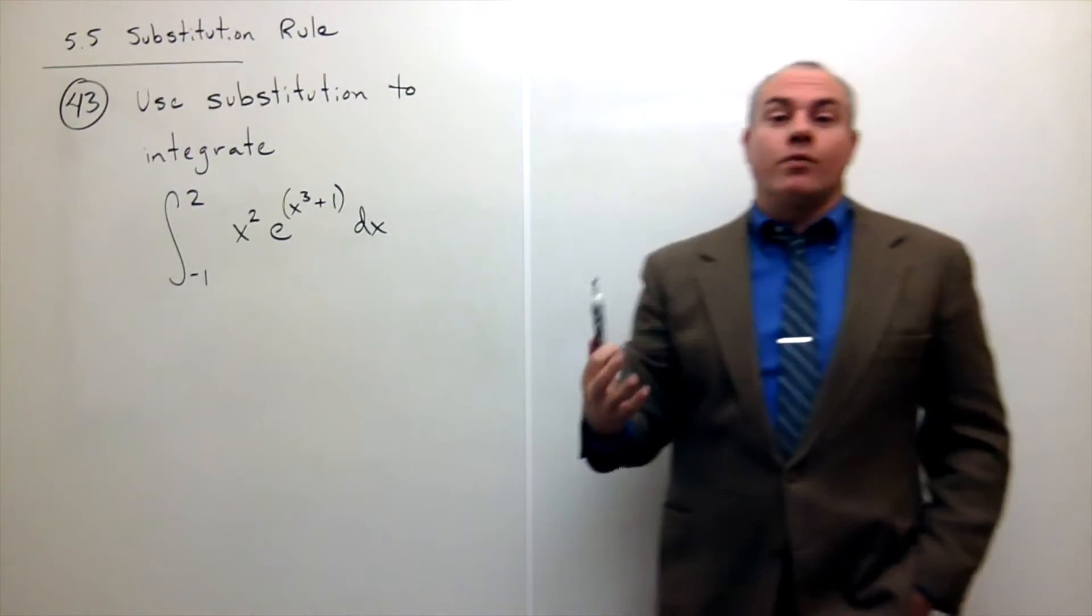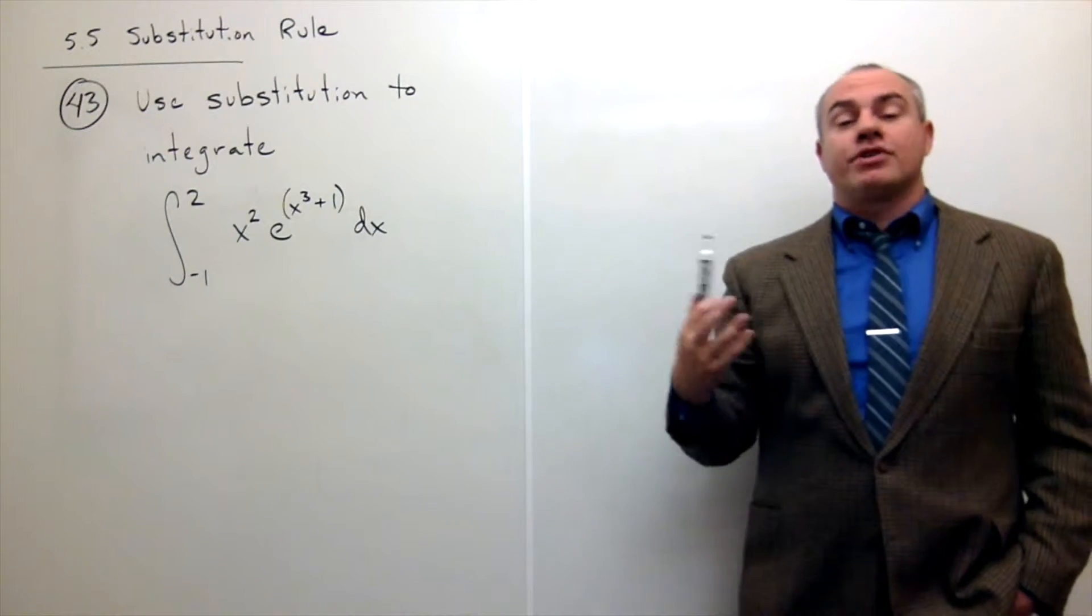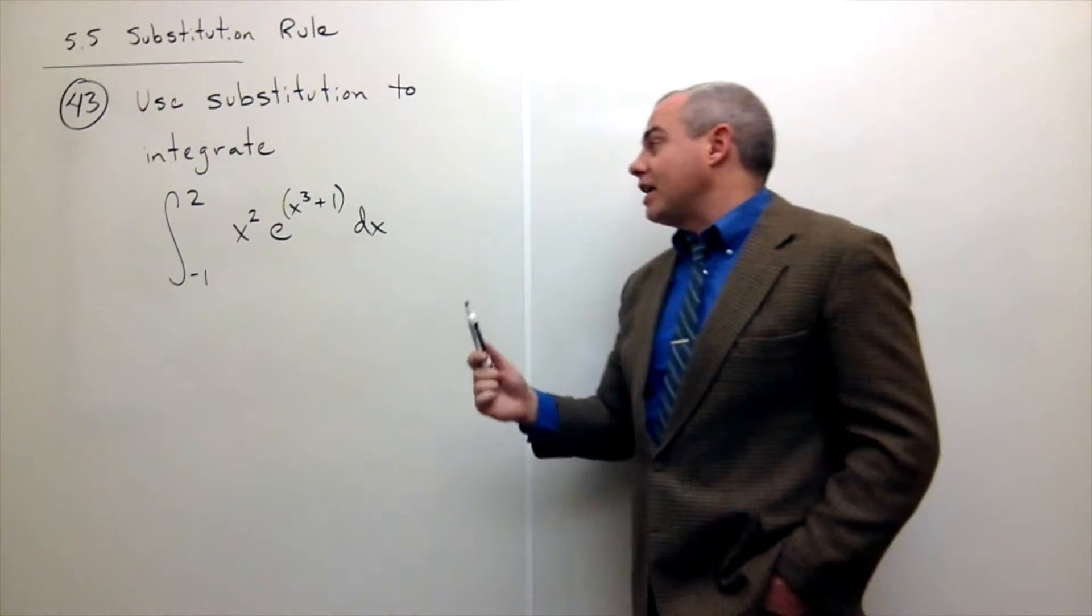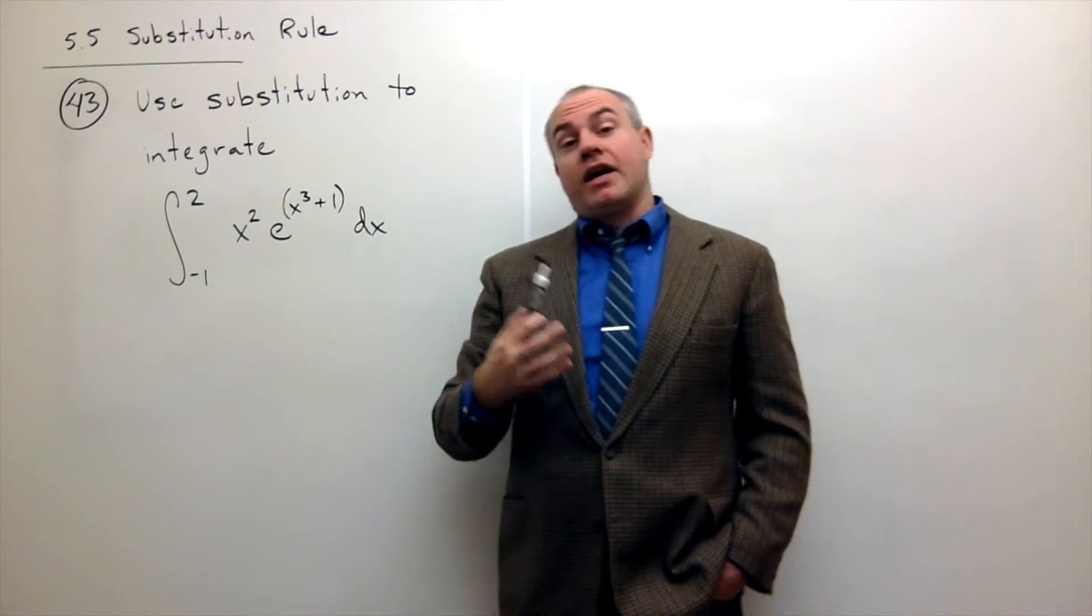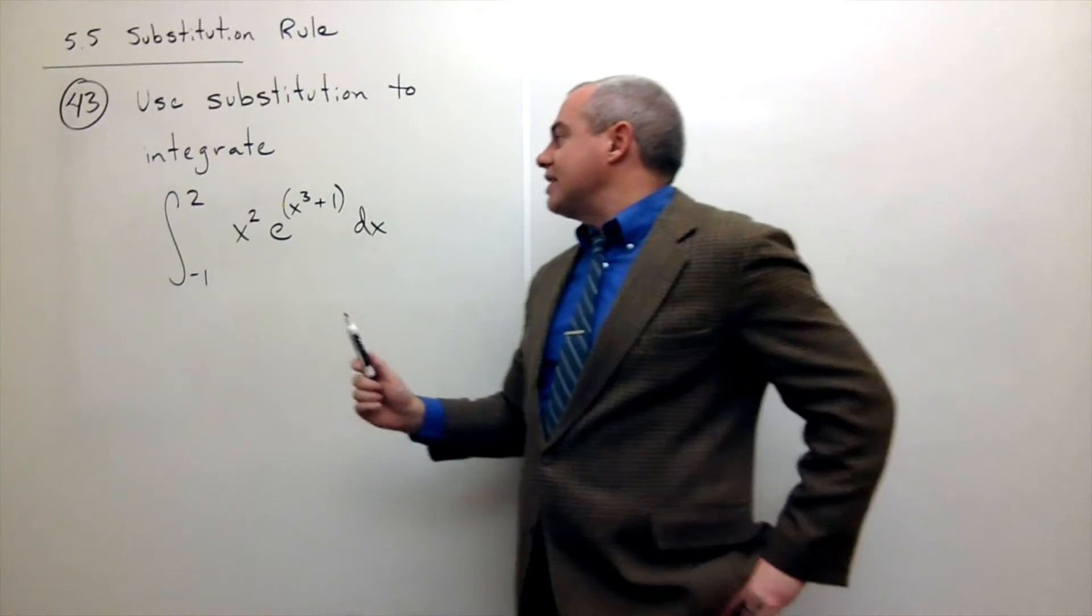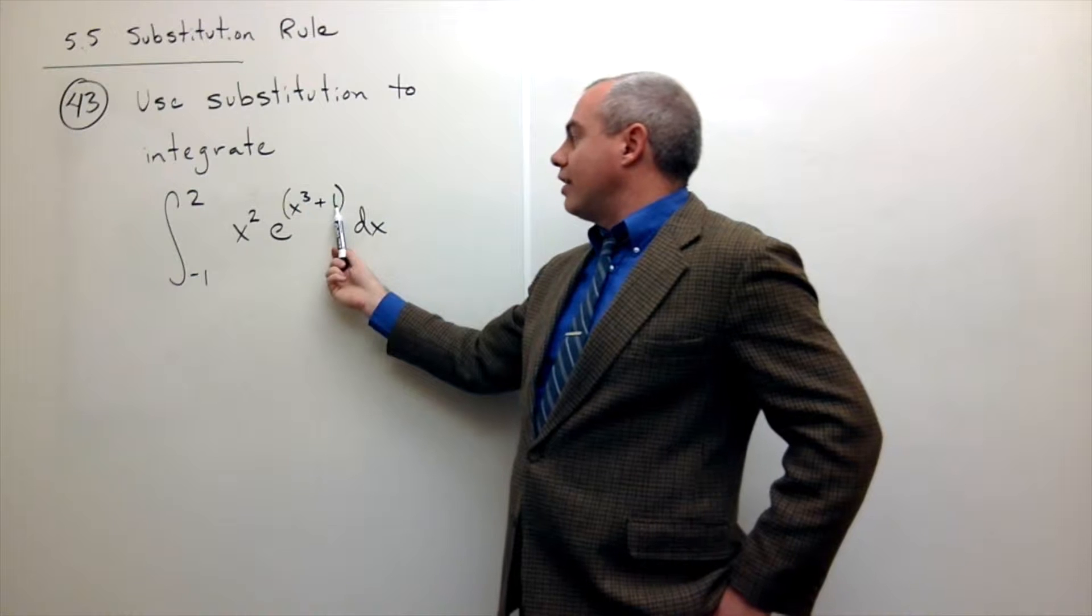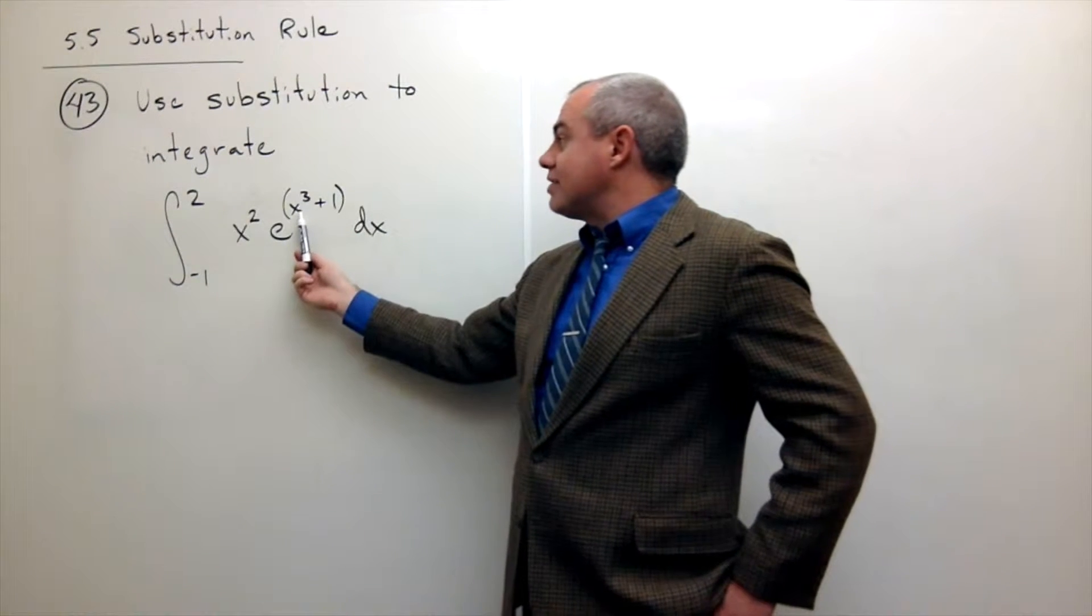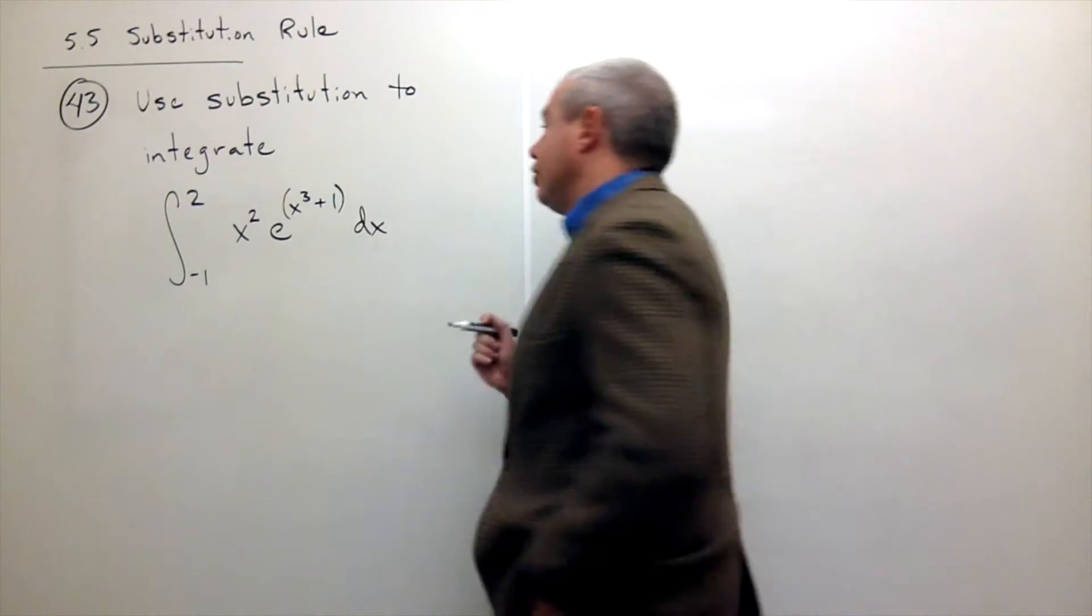So the first thing we always have to decide is what should be the u-substitution and by now we should be getting pretty good at guessing what the substitution should be. We're looking for something whose derivative shows up and also that is maybe a function within a function. And the only thing I see here that is a function within a function is x cubed plus 1 because e is raised to the x cubed plus 1. So x cubed plus 1 makes a good choice for u.